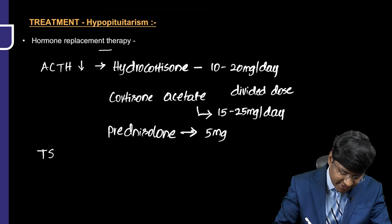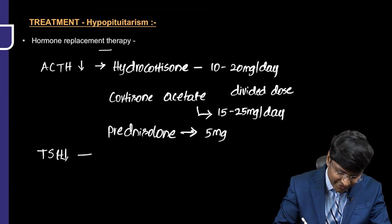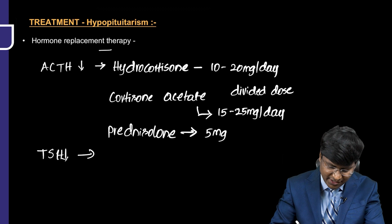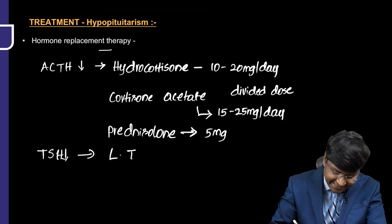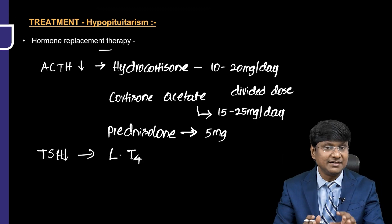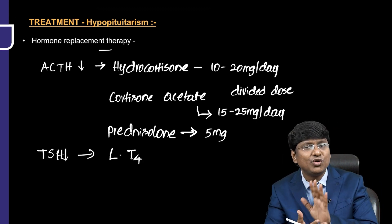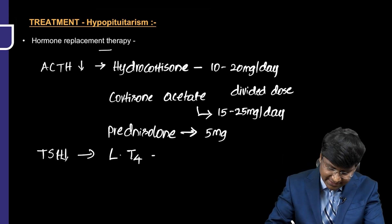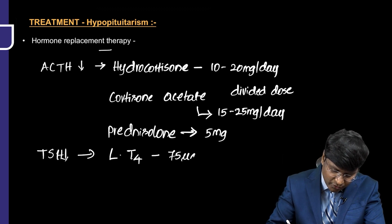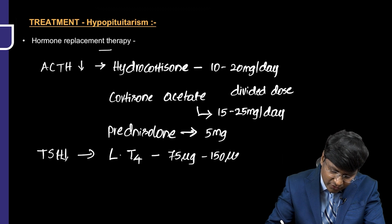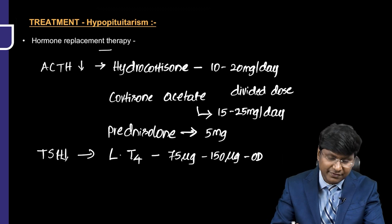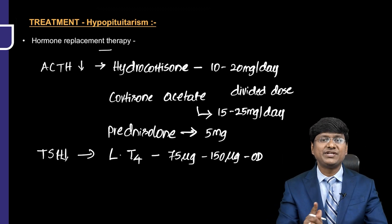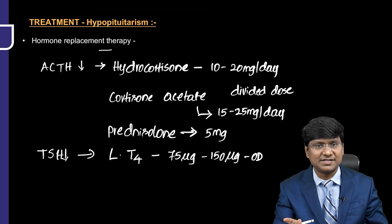These patients also have secondary hypothyroidism because of TSH deficiency, for which you need to give levothyroxine (LT4). The dosage of levothyroxine should be around 75 micrograms per day to 150 micrograms daily, given early in the morning in an empty state.